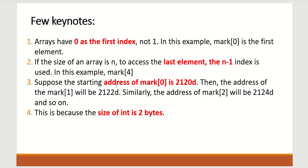Suppose the starting memory address for mark[0] is 2120d, then the address of mark[1] will be 2122d, and the address of mark[2] will be 2124d, and so on. This is because the size of integer is 2 bytes. So addresses go 20, 22, 24 and so on, because we used data type integer and the size of integer is 2 bytes.